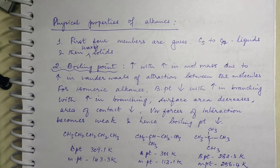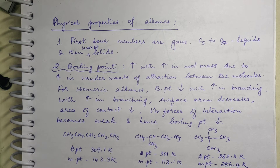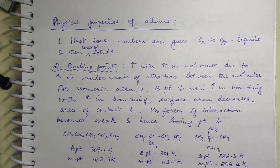We saw the preparation of alkanes, alkenes, and alkynes. Now let's go one by one through the physical and chemical properties of alkanes, alkenes, and alkynes. Let us first start with physical properties of alkanes and then we'll slowly move on to chemical properties.